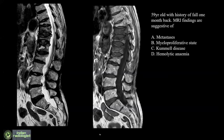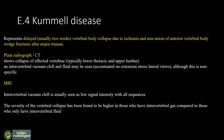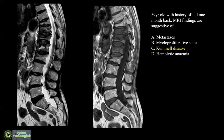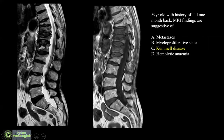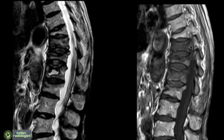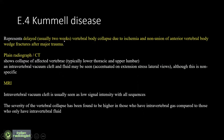36 percent think this is metastasis and 37 percent diagnosed it as Kummell's. This is Kummell's disease — osteonecrosis of the bone with delayed vertebral body collapse due to ischemia and non-union of anterior vertebral bodies with wedge fractures after major trauma. These are not metastasis; the posterior margins are not convex, there is wedging, they are not homogeneously hypointense on T1, and on T2 you can see the positive fluid sign characteristic of osteoporotic fractures.